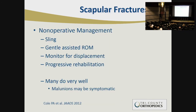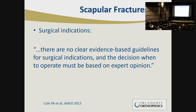Non-operative management is generally a sling with gentle assisted range of motion, monitoring for displacement with serial x-rays, and progressive rehabilitation as pain allows. Many patients will have pseudoparalysis early on, but you want to ensure there's no brachial plexus injury. Many do very well even with malunion, so it doesn't have to be perfectly fixed. As Peter Cole noted, there are no clear evidence-based guidelines for surgical indications — the decision must be based on expert opinion — and this continues to be true due to limited data volume.